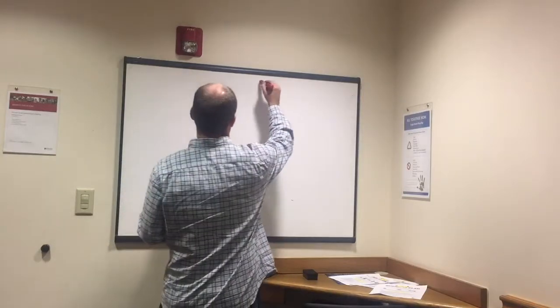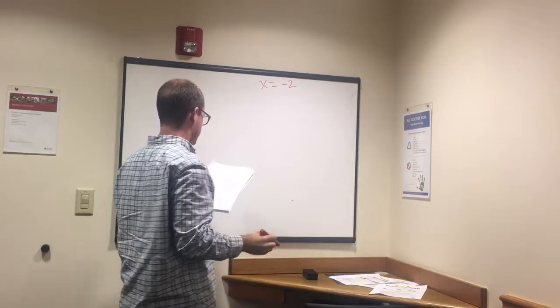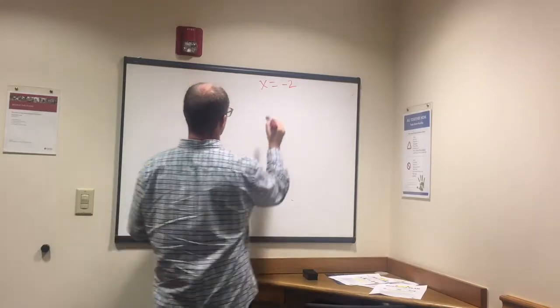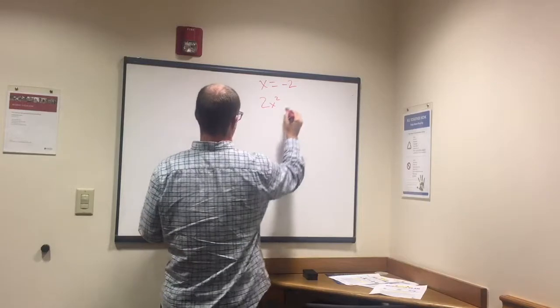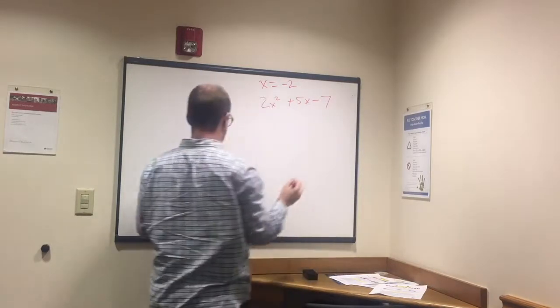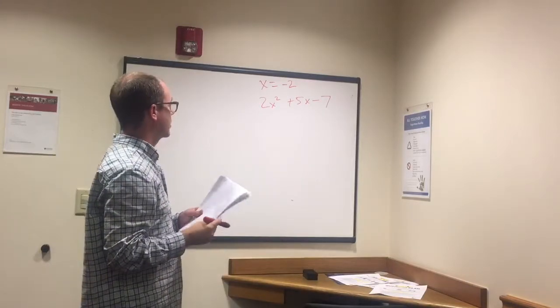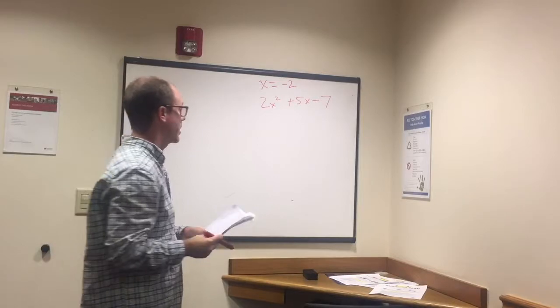We have x equals negative 2. And then they ask you what is 2x squared plus 5x minus 7. So all we're really going to do here is plug in that negative 2 for x.